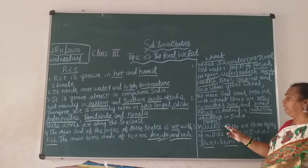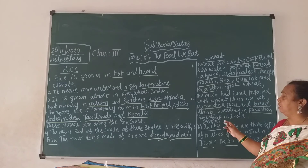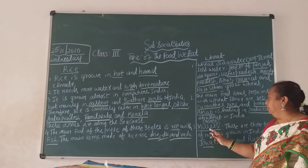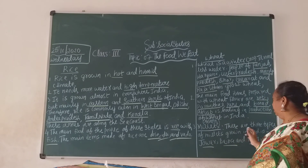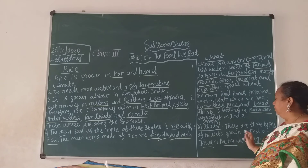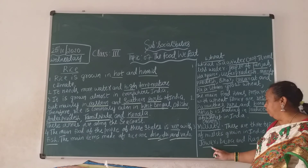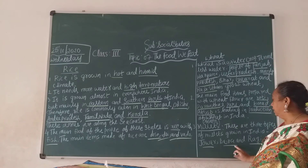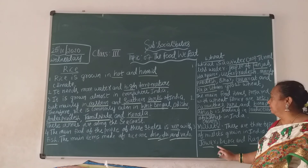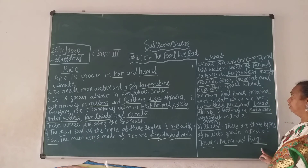Now come to millets, children. Millets means siridhanya. There are three types of millets growing in India: Jowar, Bajra and Ragi. These are millets, children.